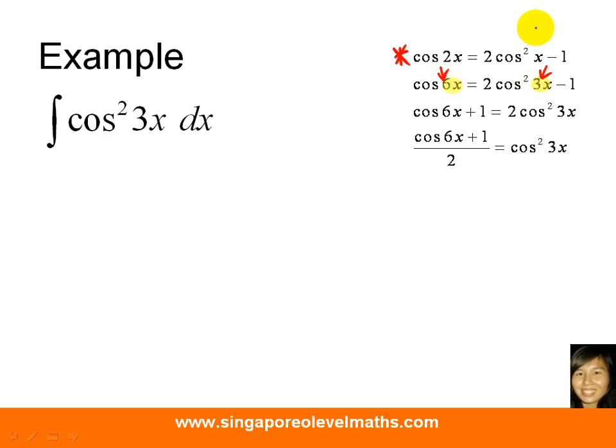This is what double angle formula is all about. After you are done with that, you rearrange the equation so that you get cosine square 3x as the subject. Now, this is the result that we want to make use of.